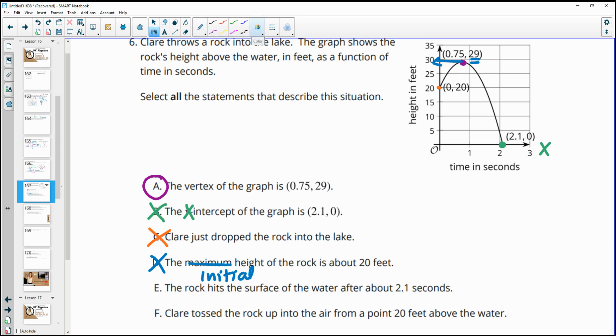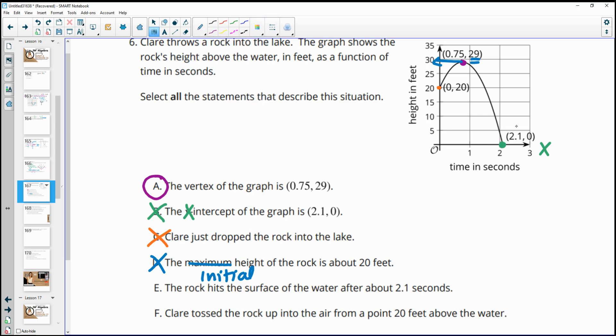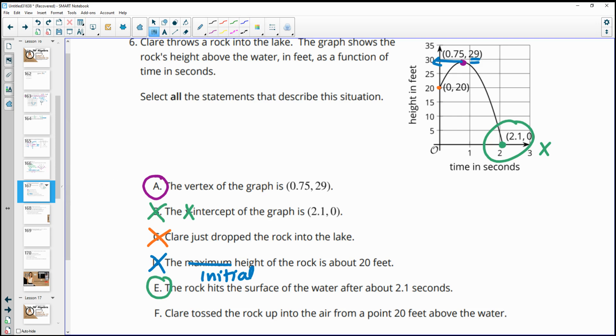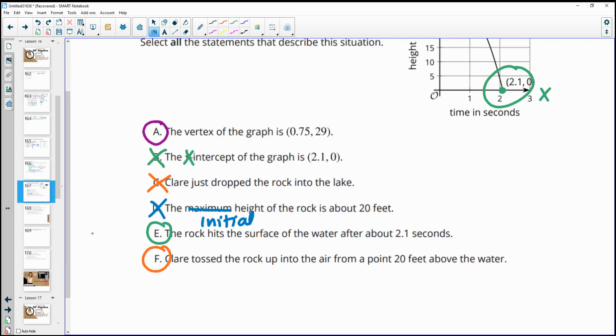The rock hits the surface of the water at about 2.1 seconds. That's true. OK. That's what's happening here is it's getting to a height of zero after 2.1 seconds, meaning it's hitting the water. And then F, Claire tossed the rock up in the air from a height of 20 feet. This is true. So here's the starting position of the rock, and then it's getting thrown upward starting at 20 feet. So F would be true.